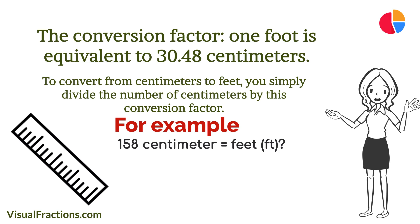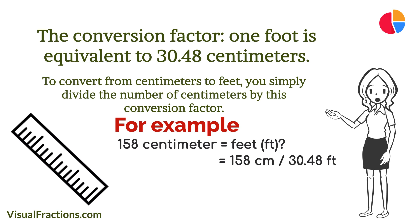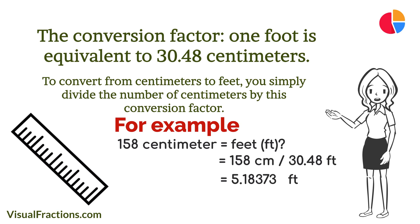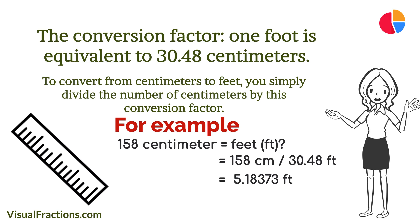We begin by dividing 158 by the conversion factor of 30.48. The result is approximately 5.18373 feet. To break this down into feet and inches, we'll separate the whole number from the decimal. The number five signifies the full feet, while the remaining decimal 0.18373 indicates a fraction of a foot.